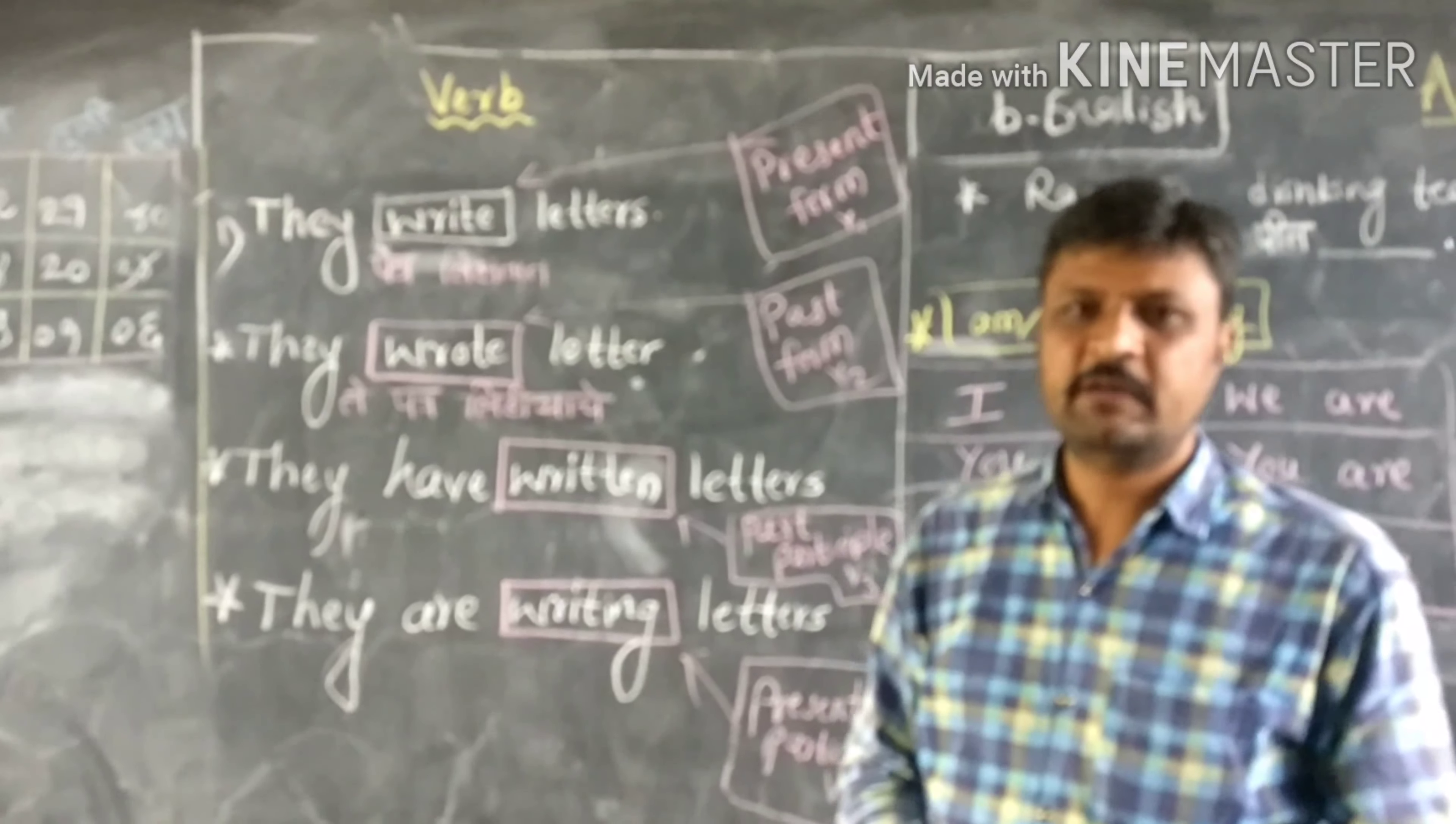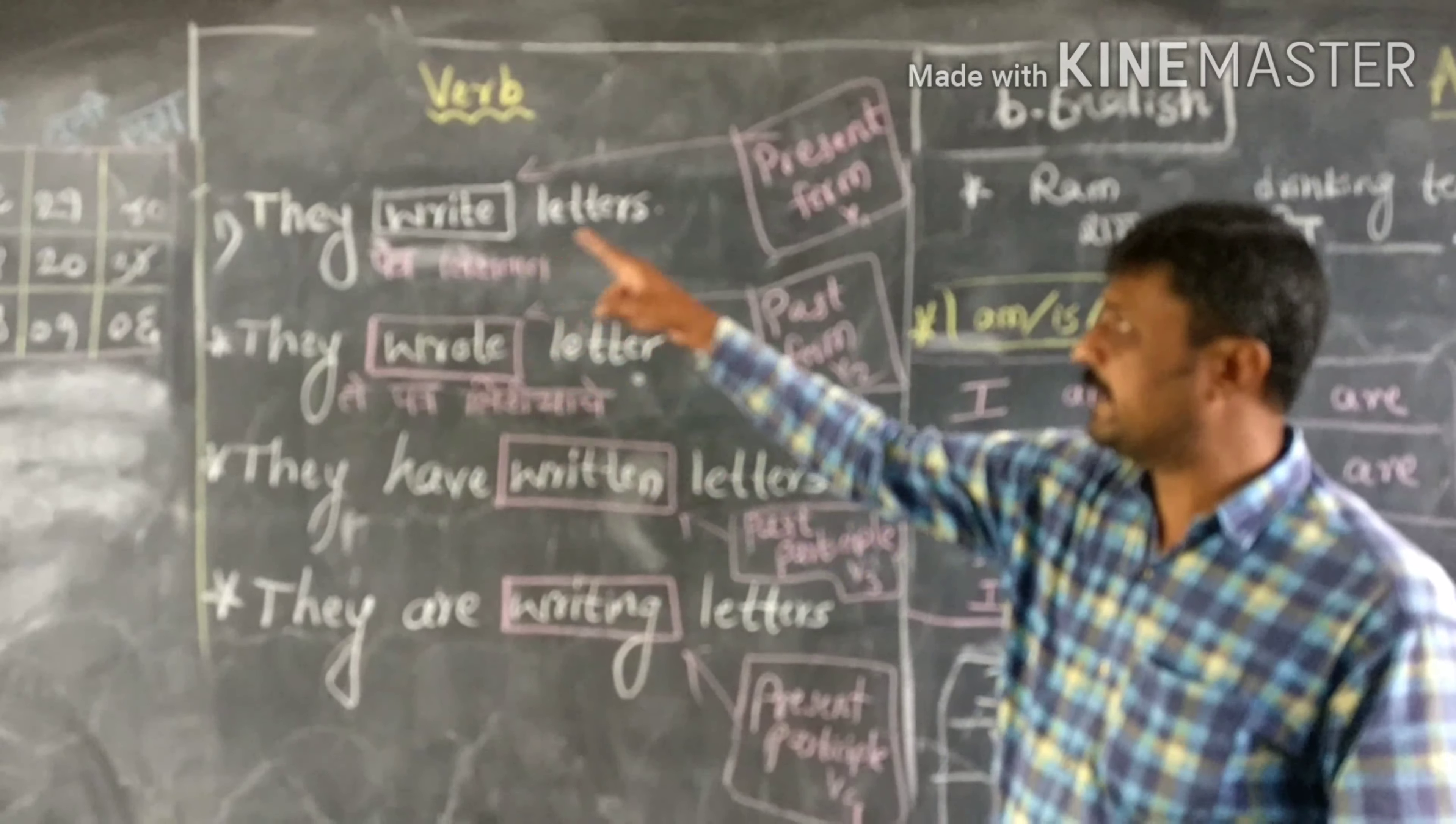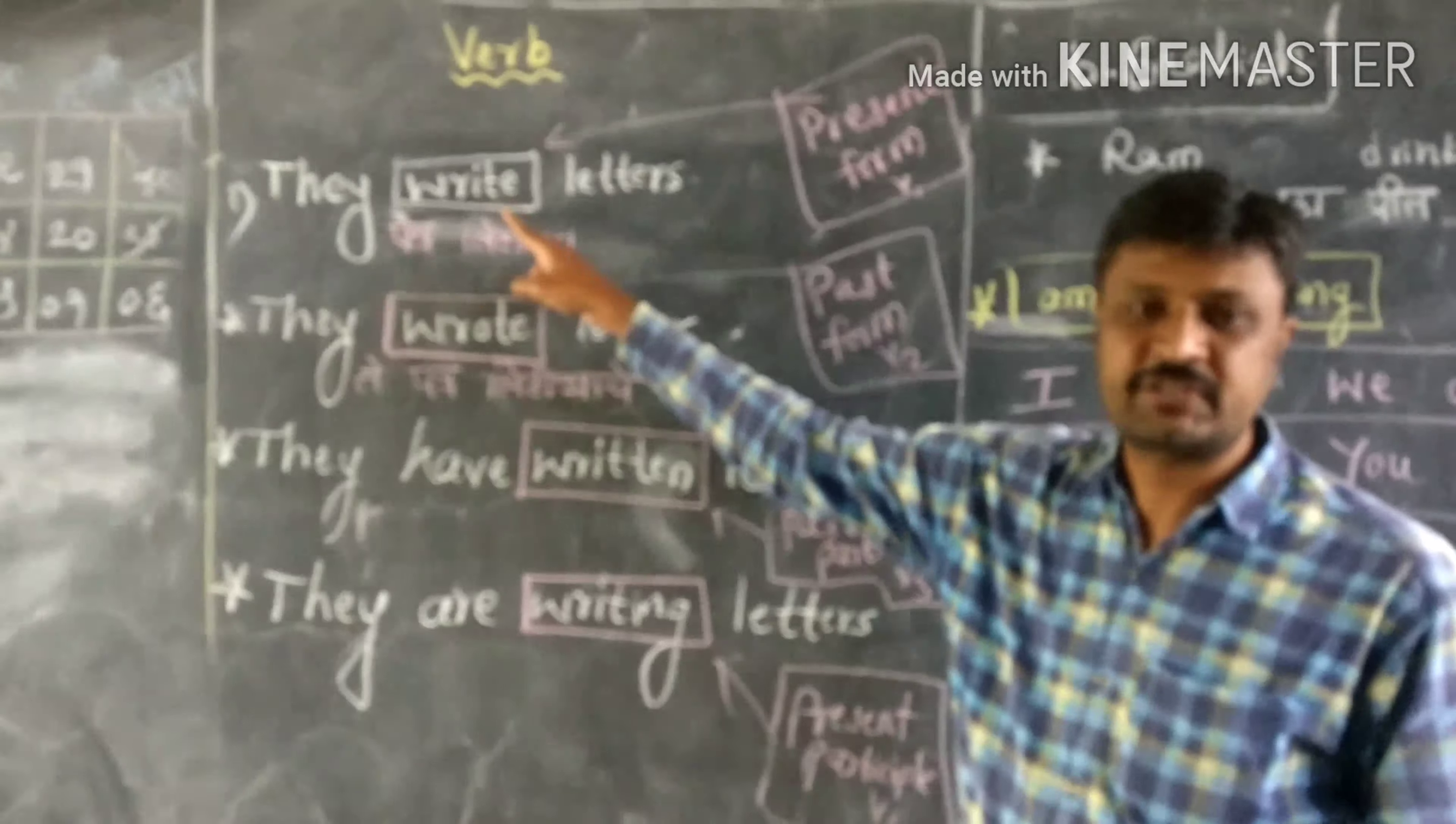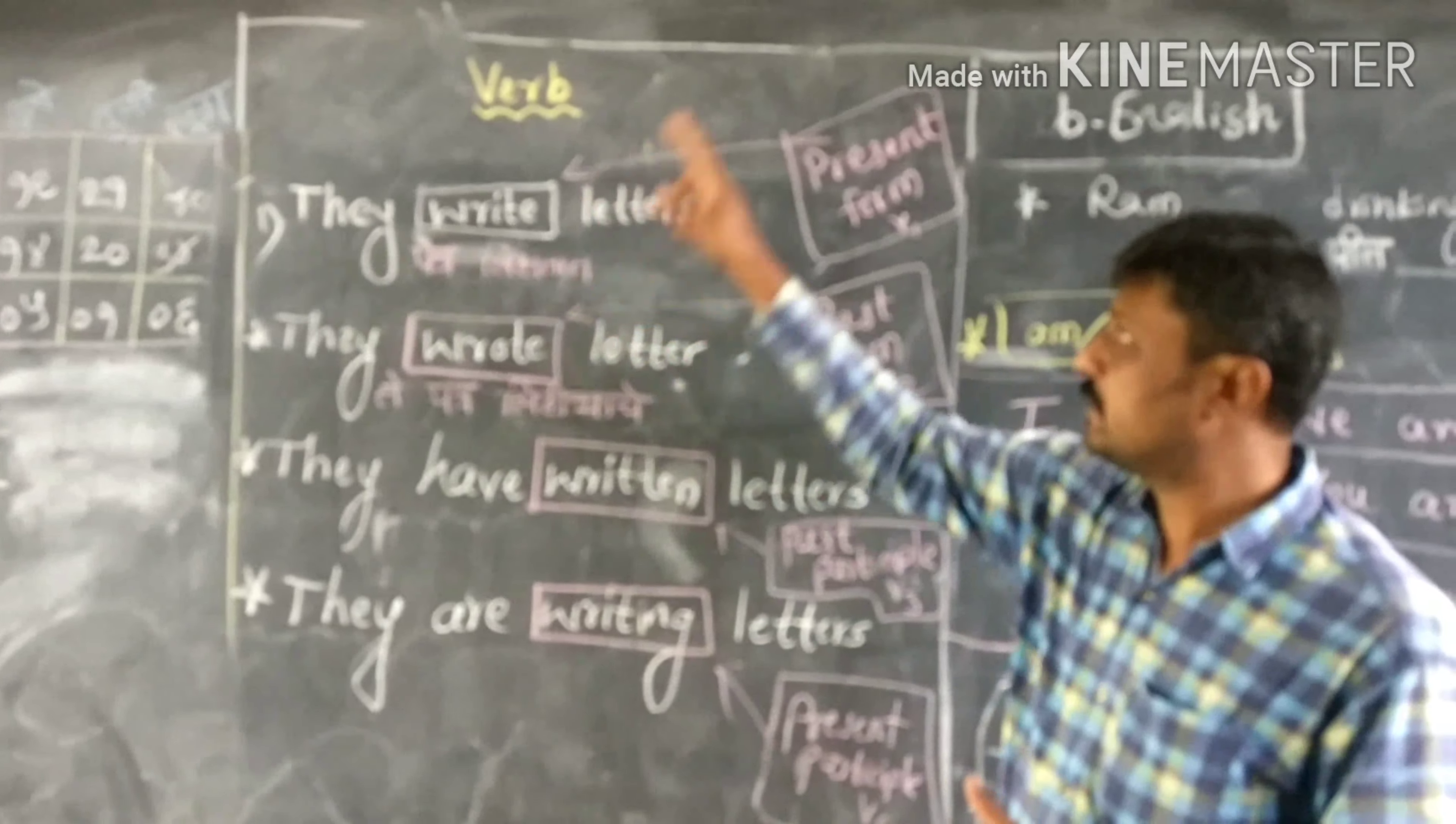Good afternoon friends, yesterday we have learnt verbs and their forms. For example, they write letters. Write is the word which denotes the action, which completes the meaning of the sentence, that is what a verb is.